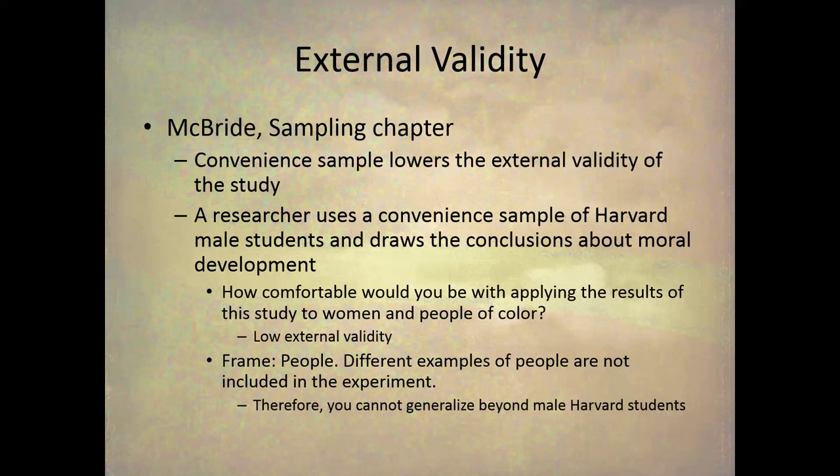McBride, in the sampling chapter, talks about how convenience samples lower external validity. A researcher used a convenience sample of Harvard male students and drew conclusions about moral development — and this actually happened. How comfortable would you be applying those results to women or people of color? Probably not comfortable at all, because you found things based on an experiment on male Harvard students and then tried to apply them to anybody else. That is a situation with low external validity.